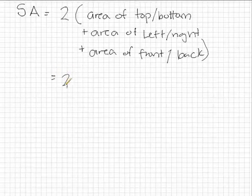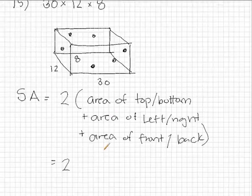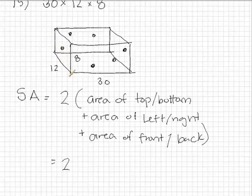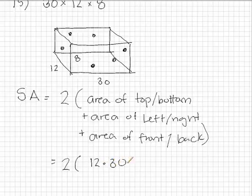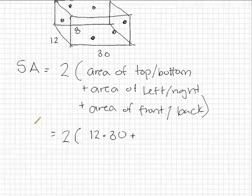Let's go ahead and find the area of the top bottom rectangle. It looks like the area of the top bottom rectangle is going to be 12 by 30. So I'm just going to put 12 times 30 there. That's just a times symbol. Let's go ahead and find the area of the left right rectangle over here. It looks like the left right rectangle is 12 by 8.